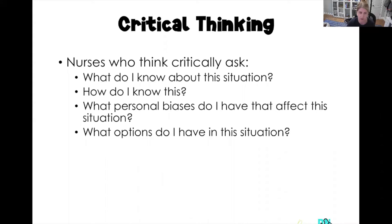What personal biases do I have that might affect this situation? This comes into play especially in situations with more ethical implications — such as taking care of a patient with a chronic pain issue seen regularly in the emergency department, or a patient seen regularly in the ICU for alcohol overdose or substance abuse. Really think about what personal biases might be impacting the situation. And then: what options do you have? That goes back to scope of practice — dependent actions require provider orders, while independent actions do not.